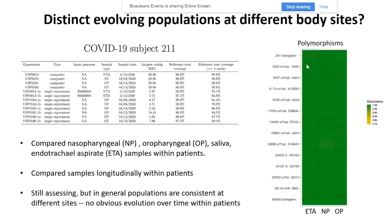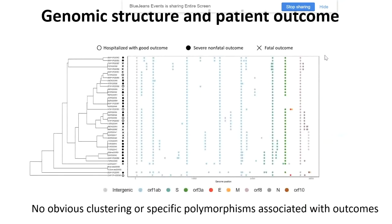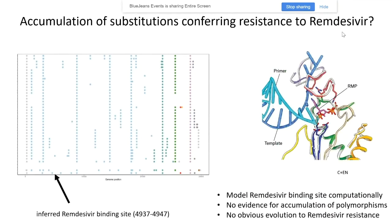Now that we have all this data, we can start asking some questions. One question: are there evolving populations at different body sites? We compared nasopharyngeal, oropharyngeal, saliva, and endotracheal aspirate samples within patients, and also compared some samples longitudinally. While we're still assessing the data, in general it looks like populations are consistent at different sites, with no obvious evolution over time within patients. Another question: is there any correlation between genomic structure and patient outcomes? At the moment, there's no obvious clustering or specific polymorphisms associated with outcomes. A third question: is there any accumulation of substitutions conferring resistance to remdesivir? The arrow points to the inferred remdesivir binding position, and thus far we haven't found any variations in that region across our 42 genomes.